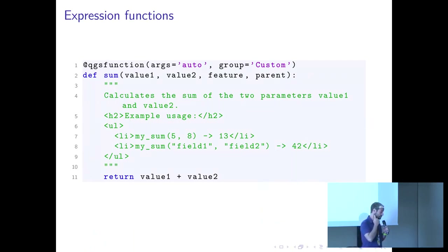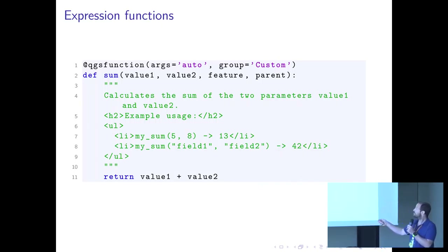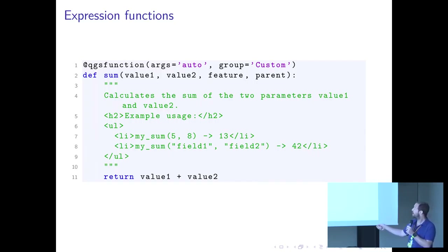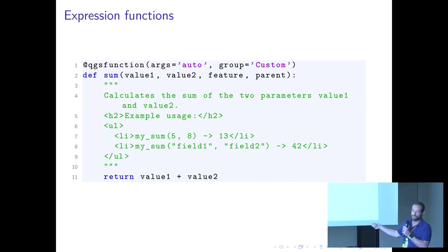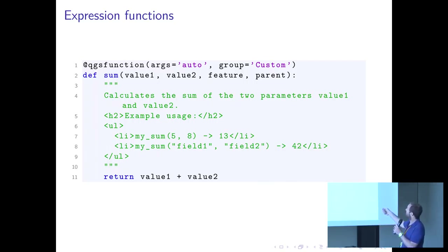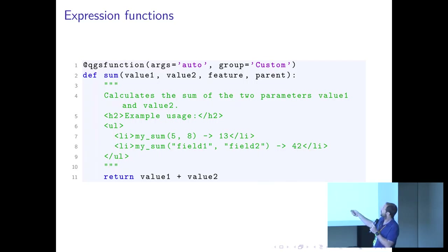In QGIS we have expression functions using @qgis_function. You write the body of your function with documentation for the function itself. It's a sum function — obviously I could have made a division and made it much more fun, but I wanted consistency. I can have easy documentation, and I can specify automatic arguments which are taken by whatever the sum function takes, and put it in the group 'custom'.